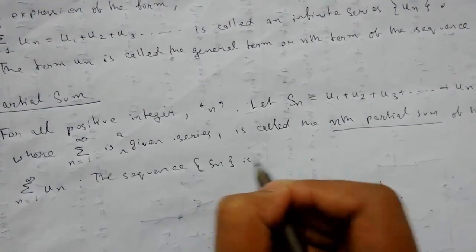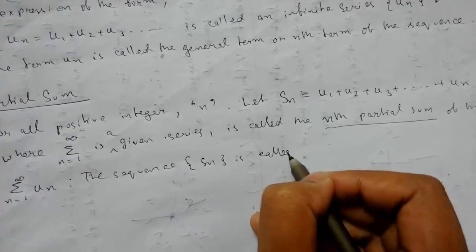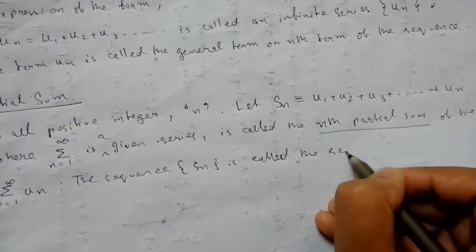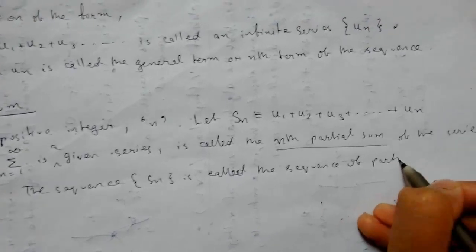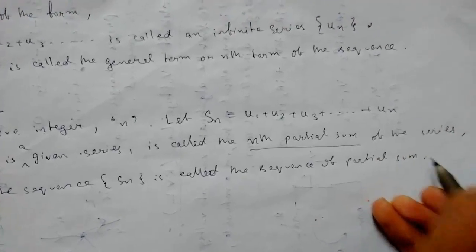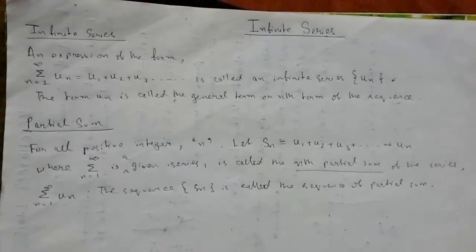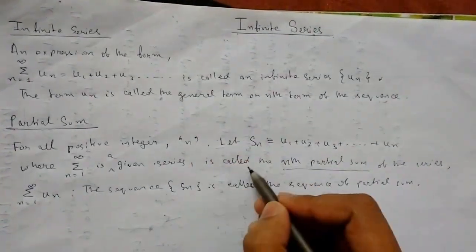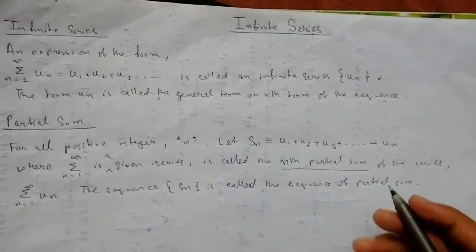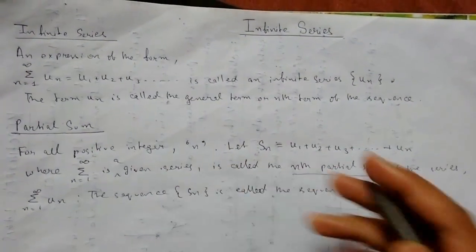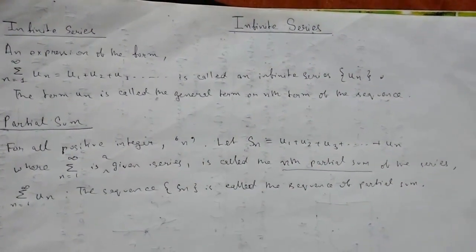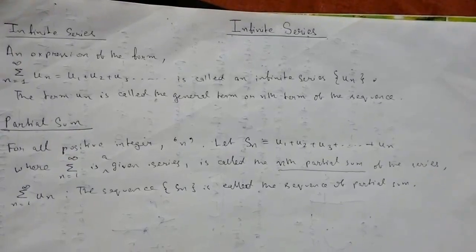SN is called the sequence of partial sums. This was basically our partial sum which came from infinite series. These are pretty easy definitions. Thank you for watching the video and we'll see you next time.